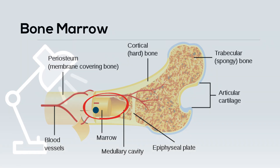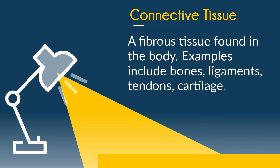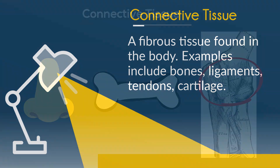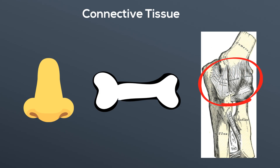Next we have connective tissue. A fibrous tissue found in the body. Examples include bones, ligaments, tendons, and cartilage. And here's some connective tissue.